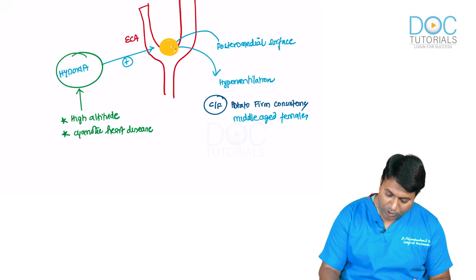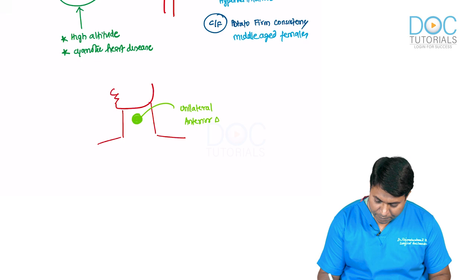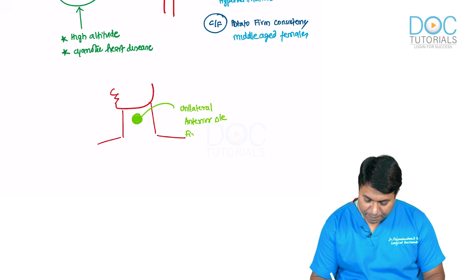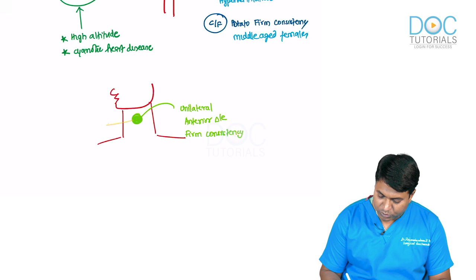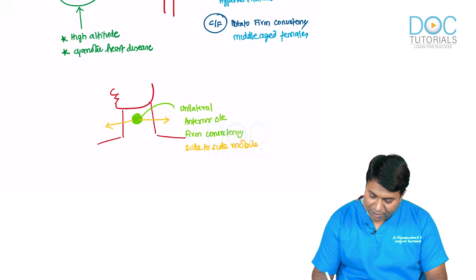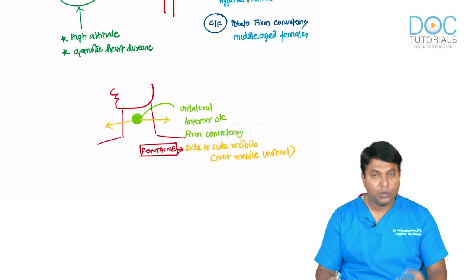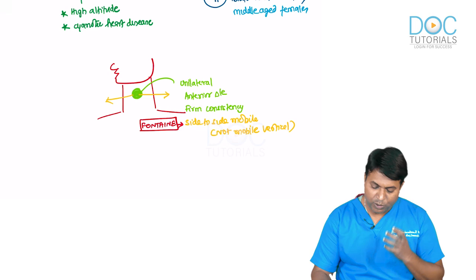It is usually unilateral, seen in the anterior triangle of the neck, firm in consistency. It is mobile side to side but cannot be moved vertically. This sign — mobile side to side but not vertically — is known as Fontaine's sign.